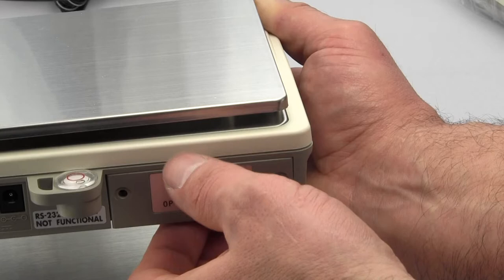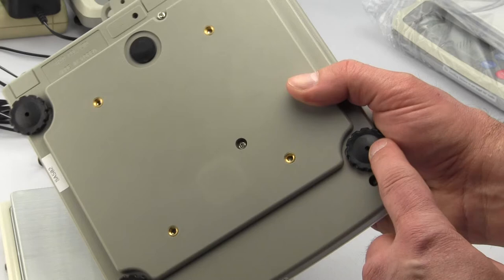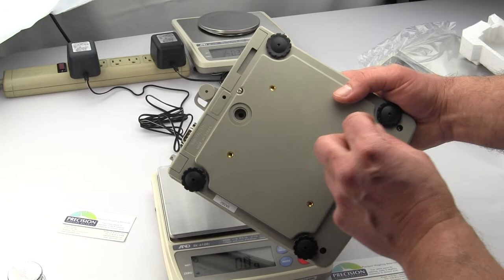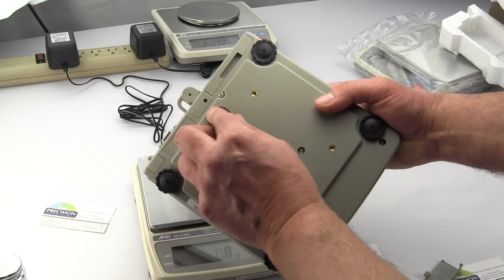On the bottom of the scale, we have four adjustable feet for easy setup. On the 6,000 gram unit, there is an underhook that you'd have to buy the optional underhook and it screws in right there on the bottom. So those are some of the features.